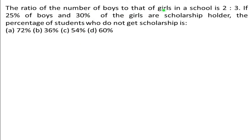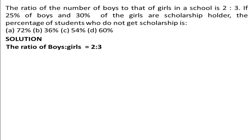The ratio of boys to girls is 2:3. 25% of boys and 30% of girls are scholarship holders. We need to find the percentage of students who do not get scholarship. Let's solve this using the ratio of boys and girls.